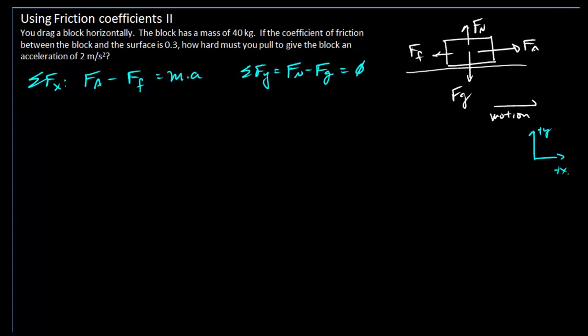We also, in this case, always have two other equations: we have our gravitational force equation that states that the force of gravity on our object is m times g, and we also have our friction equation that relates friction to the normal force through the coefficient of friction.